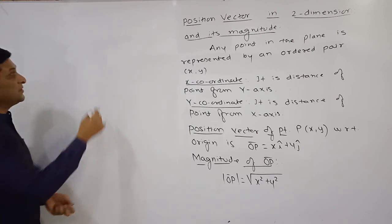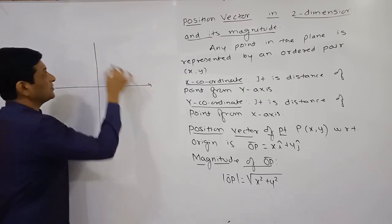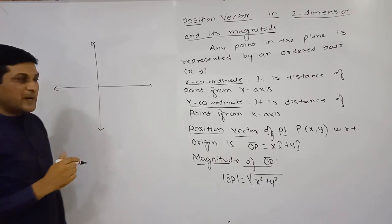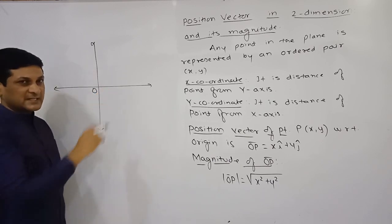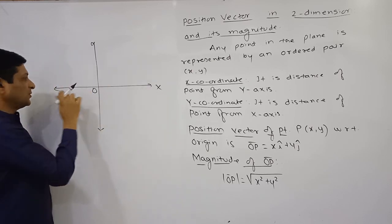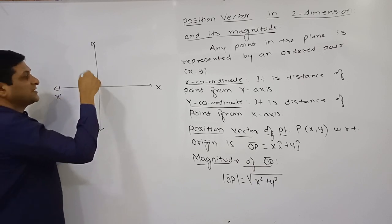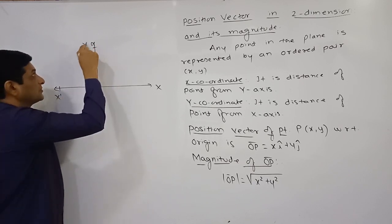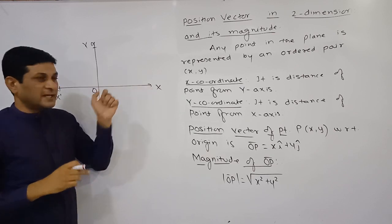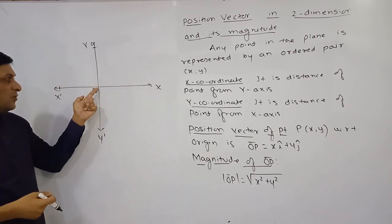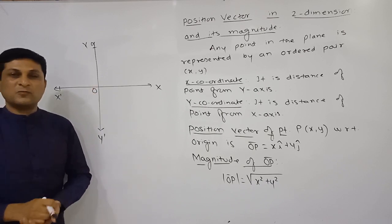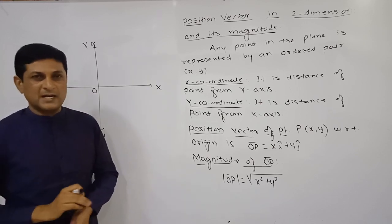While studying a plane we use two-dimensional geometry. The x-axis and y-axis divide the plane into four parts, and each part is called a quadrant. The point of intersection of the x-axis and y-axis is called the origin. We denote the x-axis by XOX' and the y-axis by YOY', where OY is the positive direction of the y-axis, OX is the positive direction of the x-axis, OX' is the negative direction of the x-axis, and OY' is the negative direction of the y-axis.